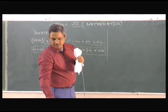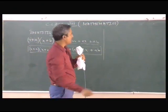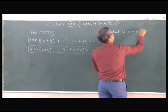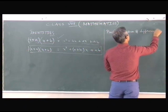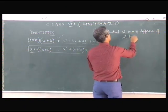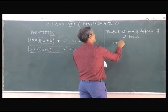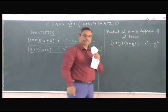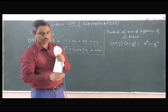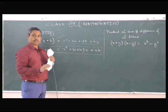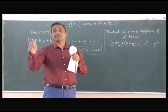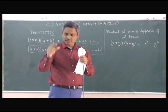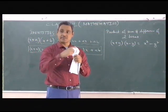There is one more identity we can study now, which is the product of sum and difference of two terms: (x + y) into (x − y) is equal to x² − y². So we are looking at these two special products or identities. In Chapter 11 we were learning multiplication of algebraic expressions; here we are looking at formulas or identities which we are calling special products.